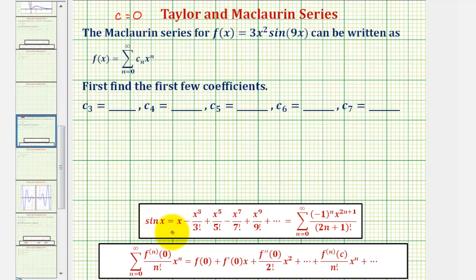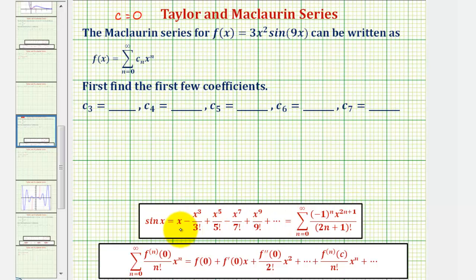Looking at the power series for sine x, notice how this can be written as the summation from n equals 0 to infinity of negative 1 to the nth — because the signs alternate — and then all the powers on x are odd, so we have x to the power of 2n plus 1, and the denominators are all odd factorials, so we have 2n plus 1 factorial in the denominator.